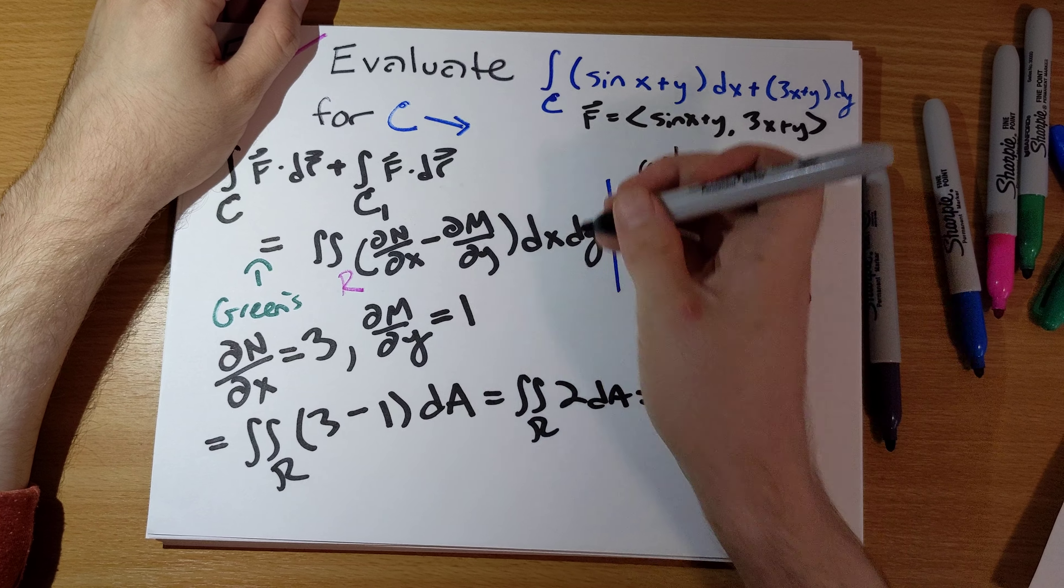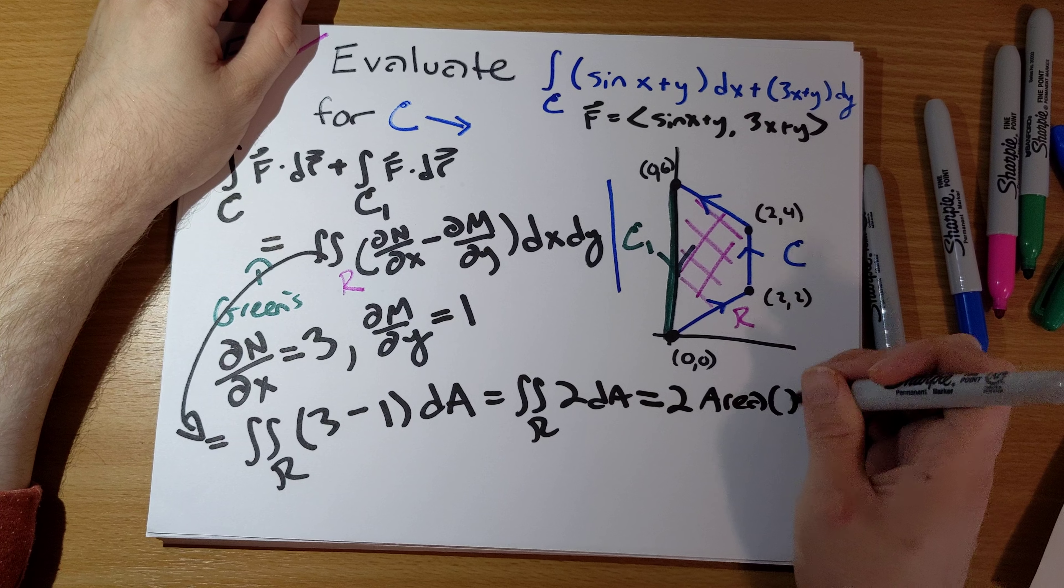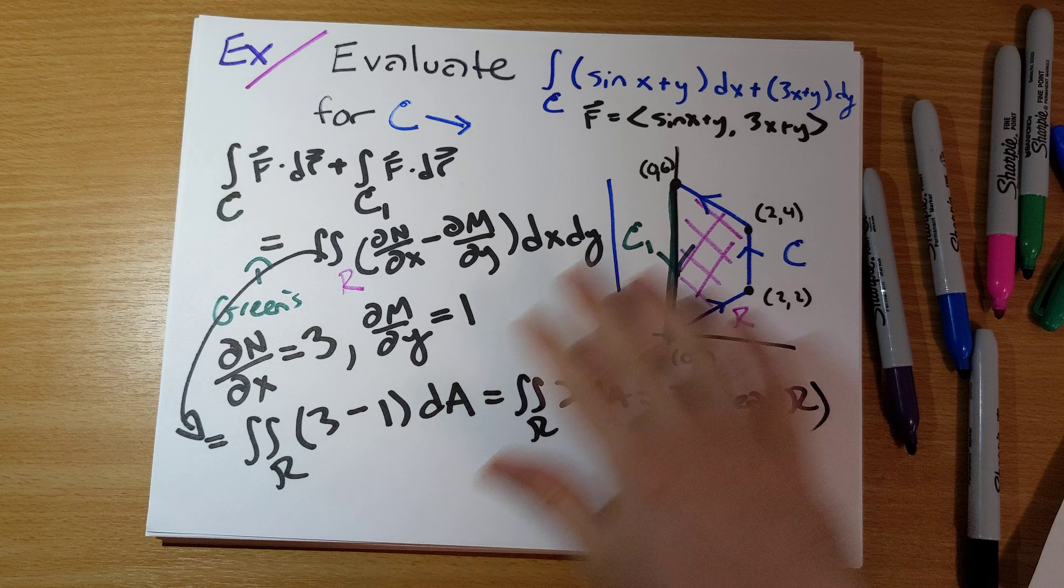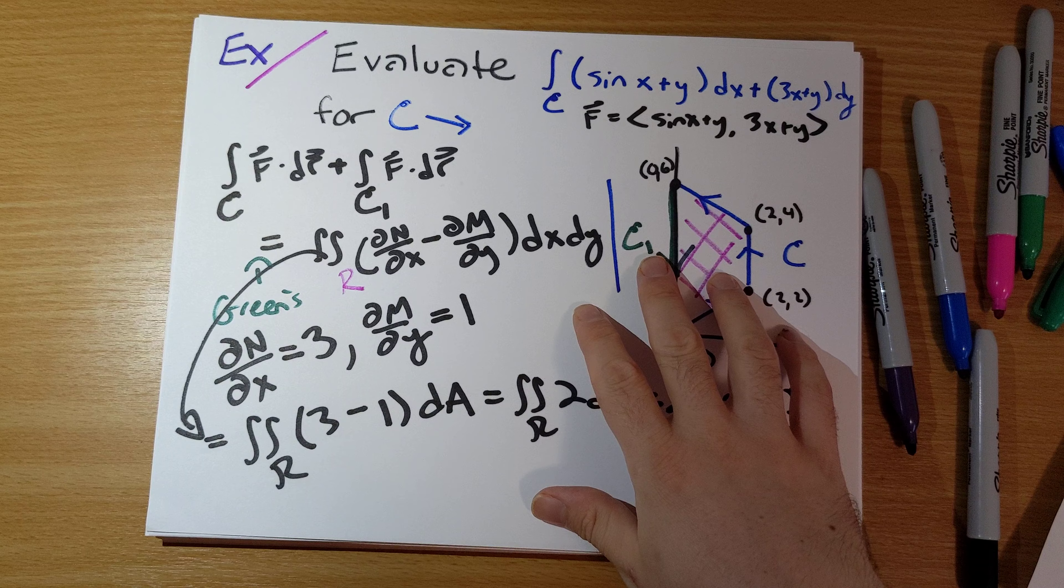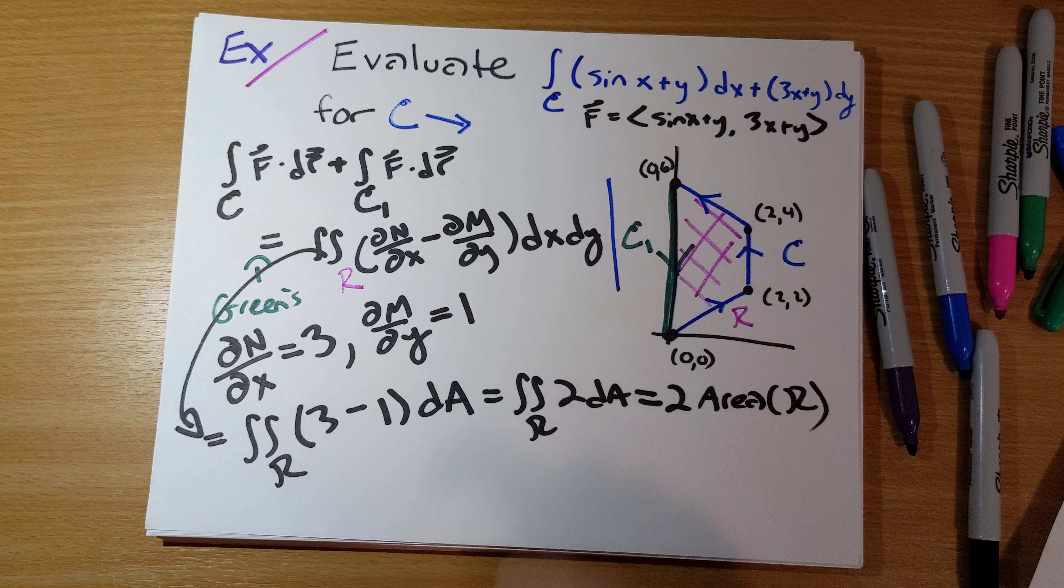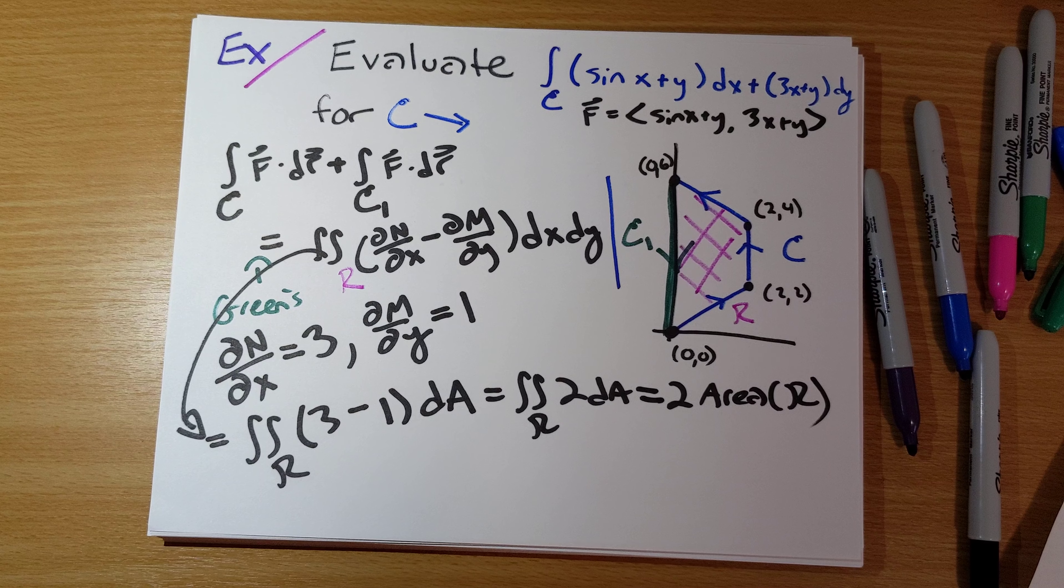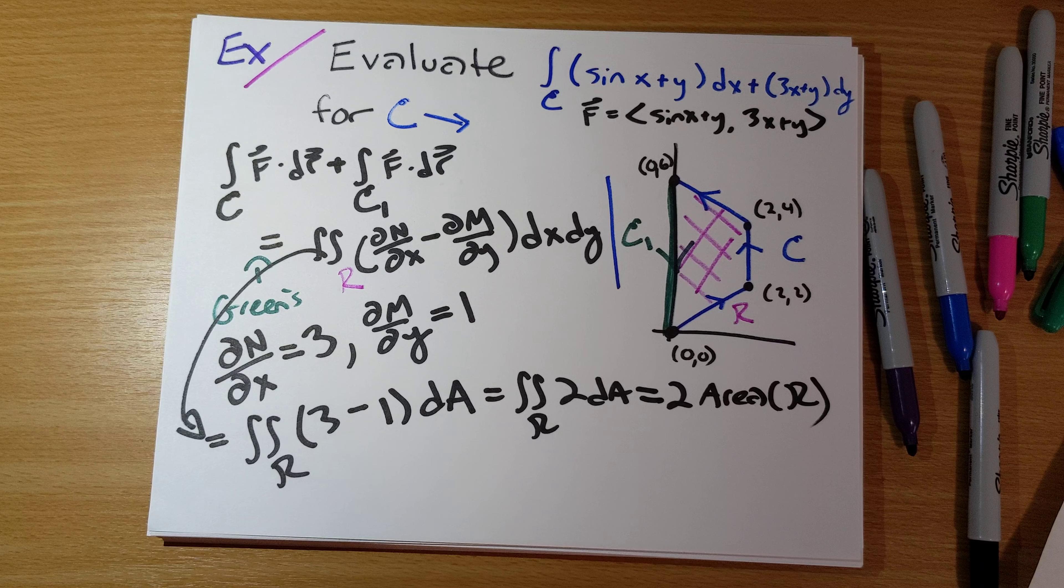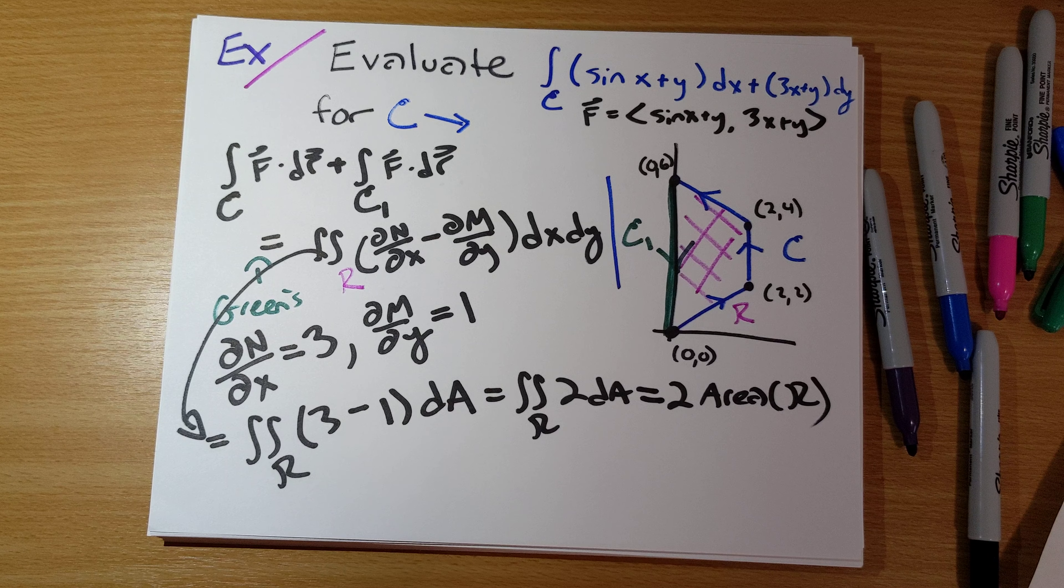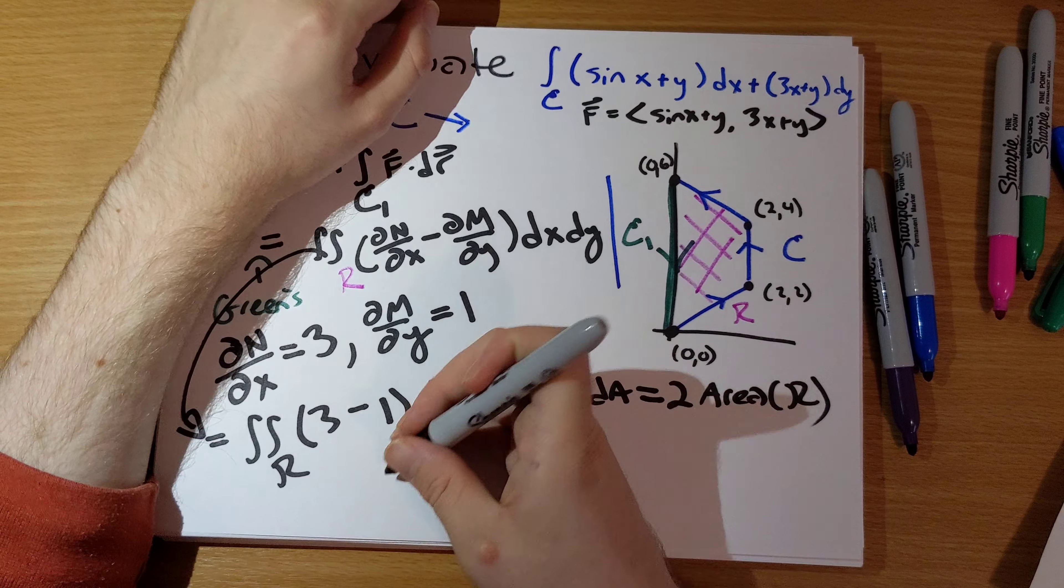This is going to be twice the area of our trapezoid. Let me point out just how nice our calculations are here. By doing this, we don't have to worry about any sine of x. Those three vector line integrals would have been complicated because of the sine term. This is a really easy calculation to do. By the way, what's the area of the trapezoid?